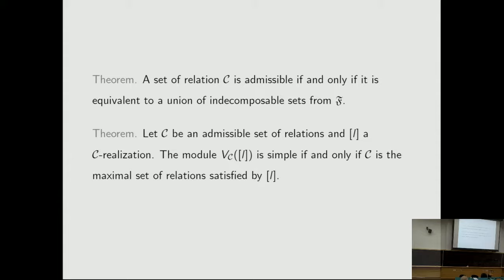So we describe all the admissible sets of relations. Let C be an admissible set of relations and L be a C-realization. The module V_C(L) is simple if and only if C is a maximal set of relations satisfied by L. This gives the irreducibility criterion for this module.